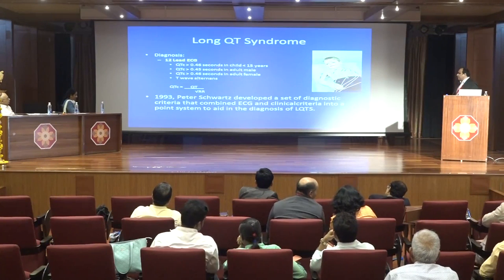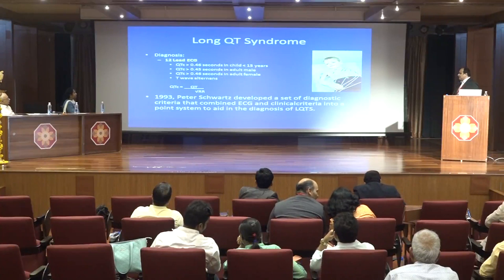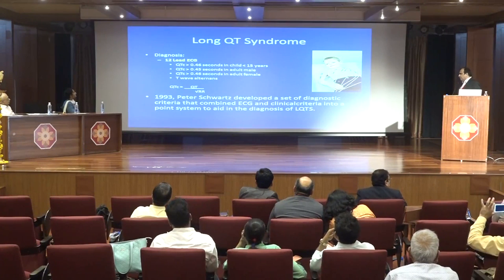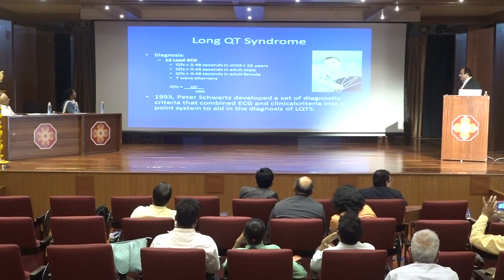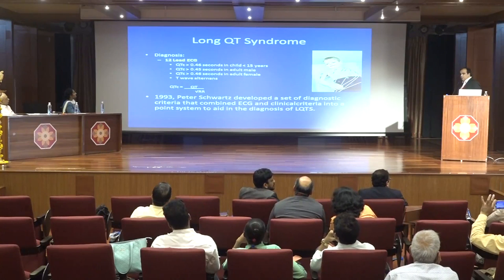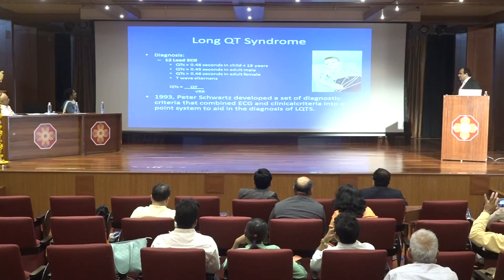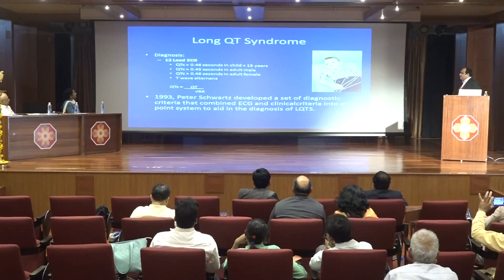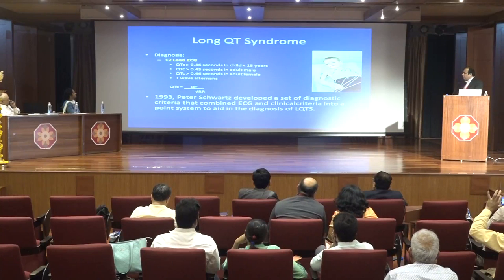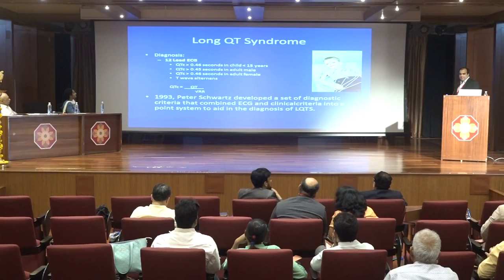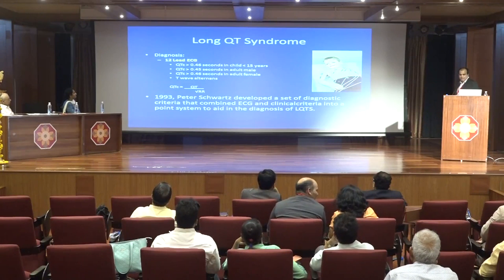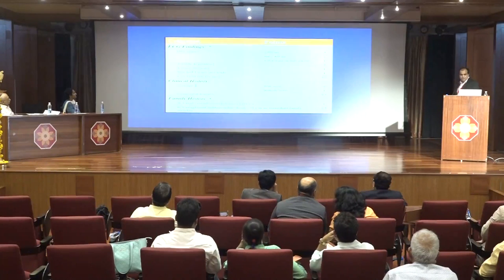A 12-lead ECG is diagnostic. QT interval greater than 0.46 seconds in children under 15 years, greater than 0.45 seconds in adult males, and greater than 0.46 seconds in adult females is significant. The QT interval should be corrected for heart rate using Bazett's formula. In 1993, Peter Schwartz developed a set of diagnostic criteria incorporating ECG findings, clinical criteria, and family history.